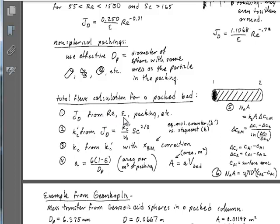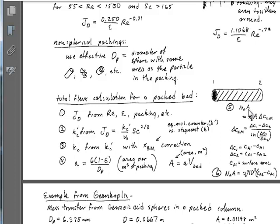The basic calculation flow is: compute the Reynolds number and void fraction from packing properties and flow characteristics, get the Chilton-Colburn J factor for mass transfer, then compute the mass transfer coefficient from the J factor. Then compute the packing area using the expression: lowercase a equals 6 times (1 minus epsilon) over the packing diameter. The total mass transfer area in the bed is this 'a' parameter times the total bed volume.